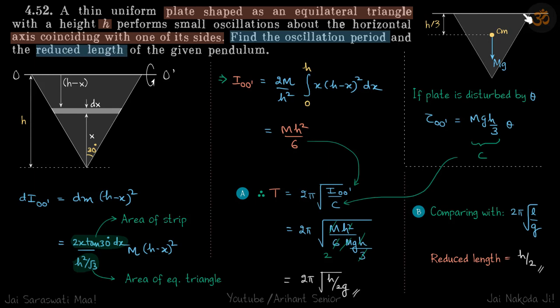So reduced length is we just find the time period of this compound pendulum and then we compare it with the time period of a mathematical pendulum. So we know of a simple pendulum, simple or mathematical pendulum, time period is 2π√(l/g). So when we compare this with the time period of this pendulum, whatever l we get, that is the reduced length of this compound pendulum.